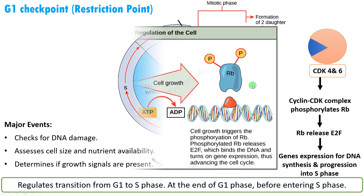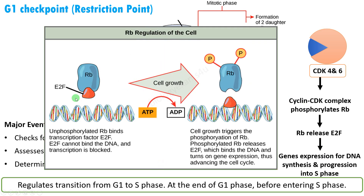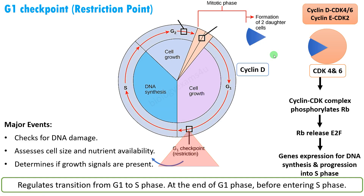To make it clearer: Rb is bound to E2F, which is a transcription factor. Once phosphorylated by the cyclin-CDK complex, Rb releases E2F. Now the transcription factor is free — E2F can bind to DNA and turns on gene expression, thus advancing the cell cycle. The cyclins involved are cyclin D, CDK4, CDK6, cyclin E, and CDK2.